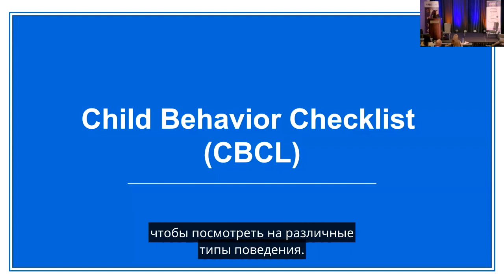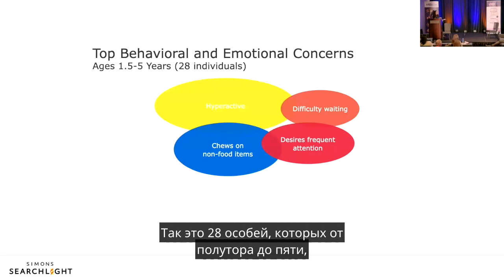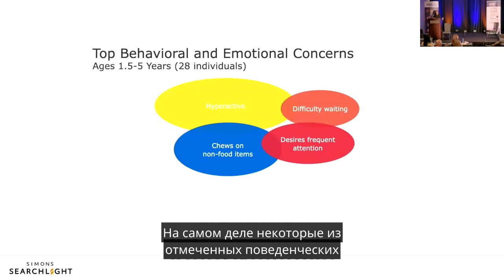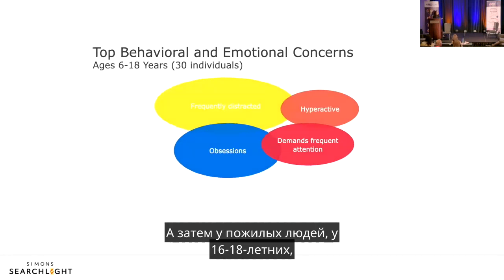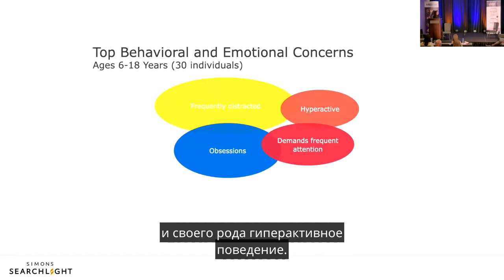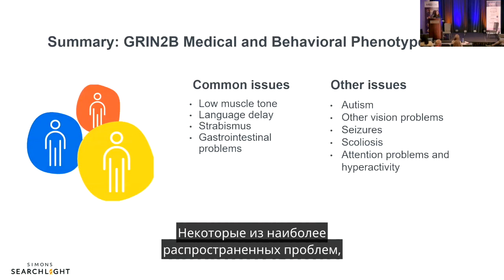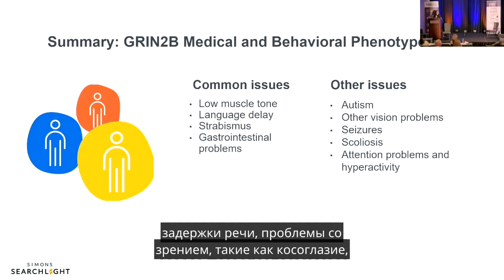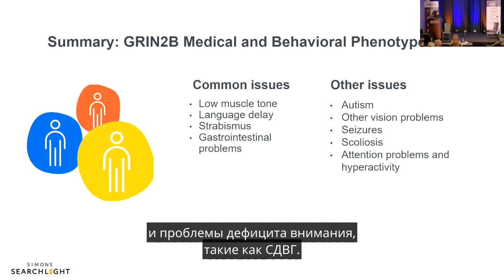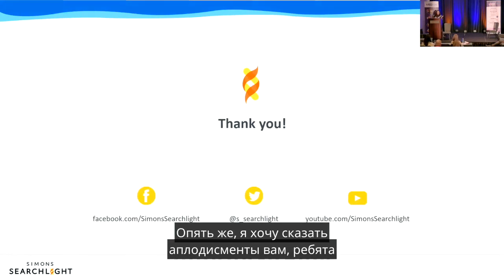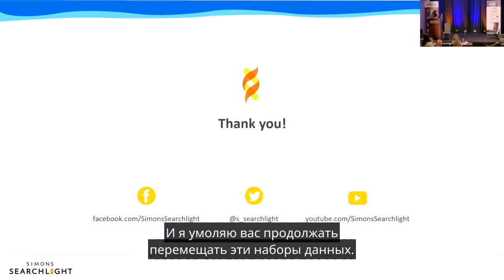The CBCL behavioral checklist findings: in younger children aged 1.5 to 5, notable challenges include hyperactivity, mouthing non-food items (pica), and attention-seeking behavior. In older individuals aged 16 to 18, frequent distractibility, obsessive behaviors, and hyperactivity are reported. In summary, the most common caregiver-reported issues in GRIN2B are hypotonia, language delays, strabismus, and GI problems, with additional concerns including autism, vision problems, seizures, scoliosis, and ADHD.